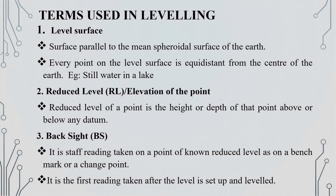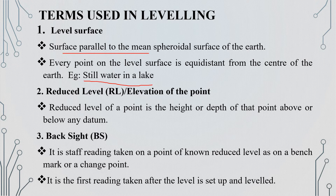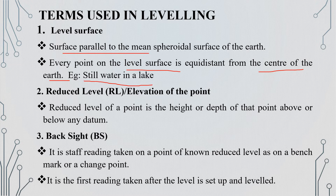Now we will discuss some important terms. The first term is level surface. A level surface is parallel to the mean surface of the earth. Every point on the level surface is equidistant from the center of the earth. That is why the level surface is said to be parallel and equidistant.